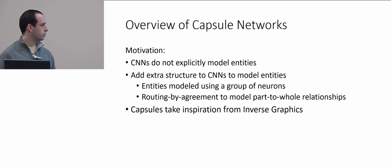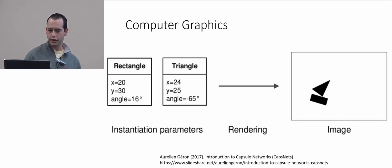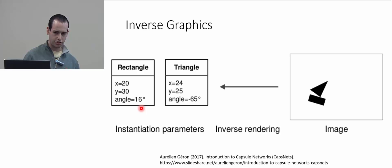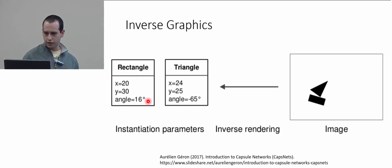This takes inspiration from inverse graphics. In computer graphics we start with a set of instantiation parameters, then call a rendering function to get an image. Inverse graphics does the inverse — starting with an image, we call an inverse rendering function to get the instantiation parameters. The idea behind a capsule network is that this inverse rendering function will be the capsule network, and these instantiation parameters will be the capsules themselves. The capsules hold information about the position and angle of different entities in the image — the pose information.